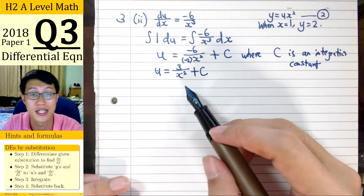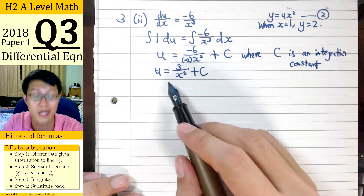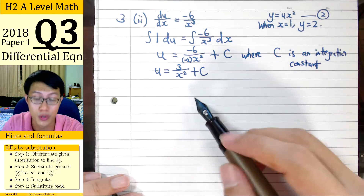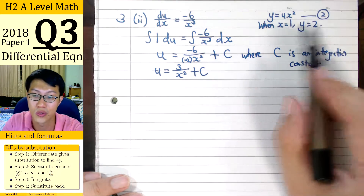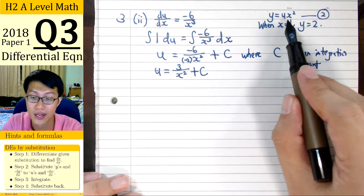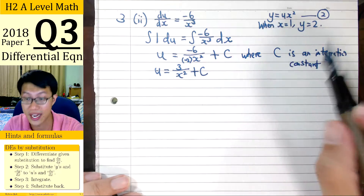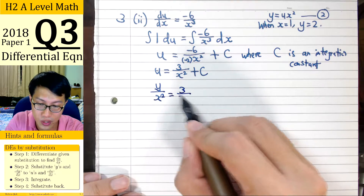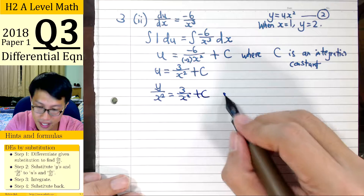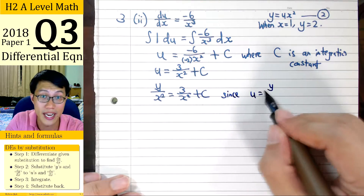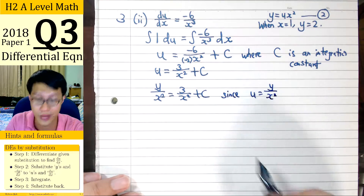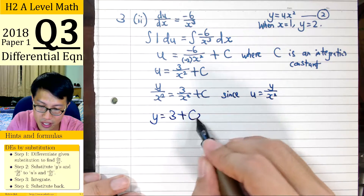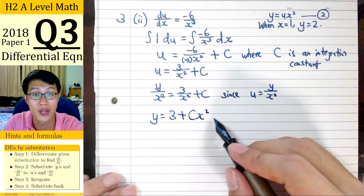Simplifying: minus 6 divided by minus 2 gives us 3, so u equals 3 over x squared plus c. We have finished the integration. To proceed, since this is a substitution question, we replace the new variable u back with the original variables. From equation 2, y equals ux squared, which means u equals y over x squared. Substituting, y over x squared equals 3 over x squared plus c, and multiplying through by x squared gives the general solution y equals 3 plus cx squared.